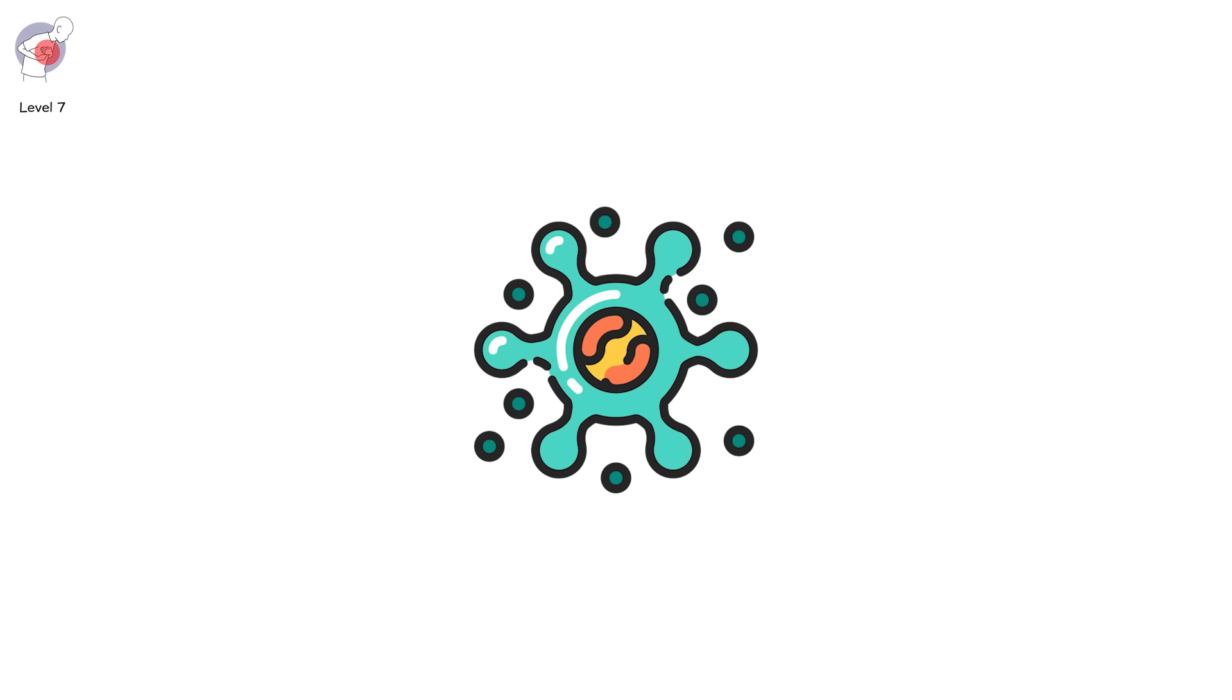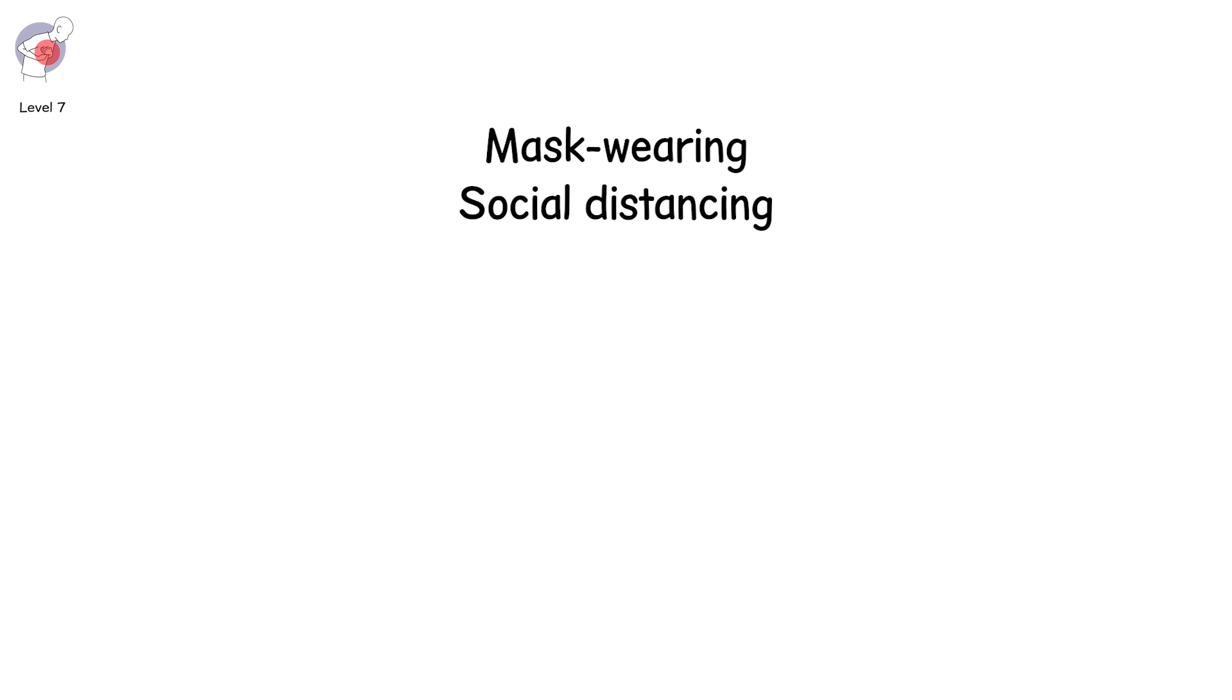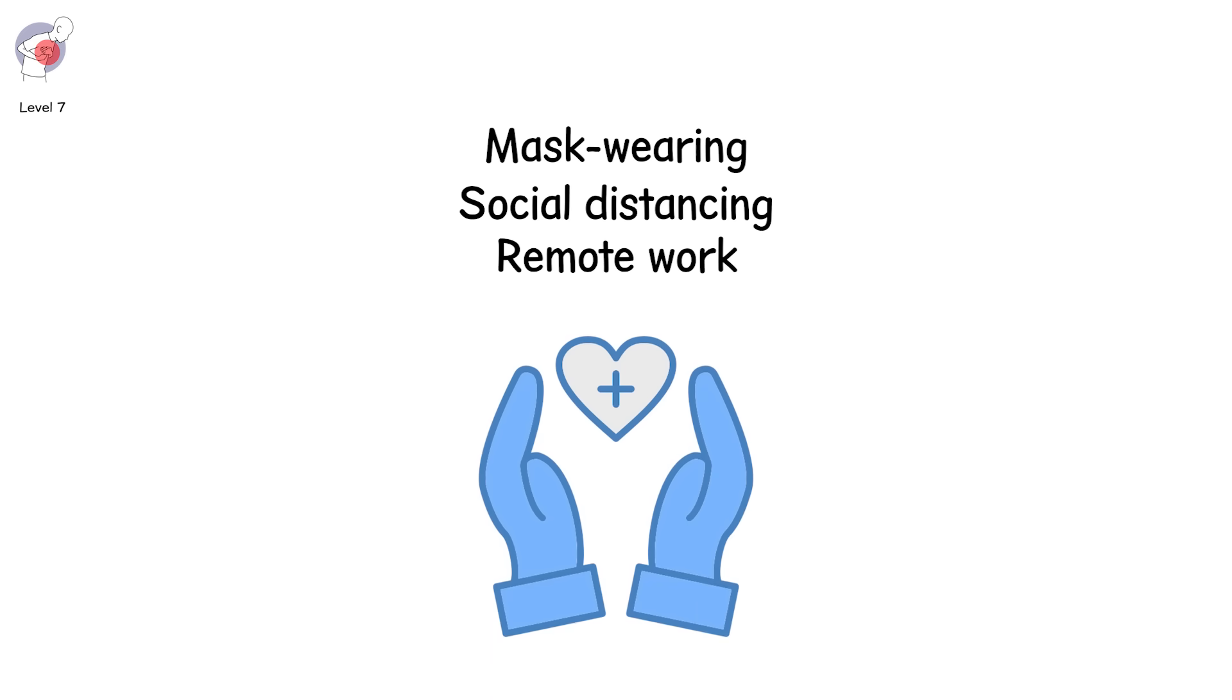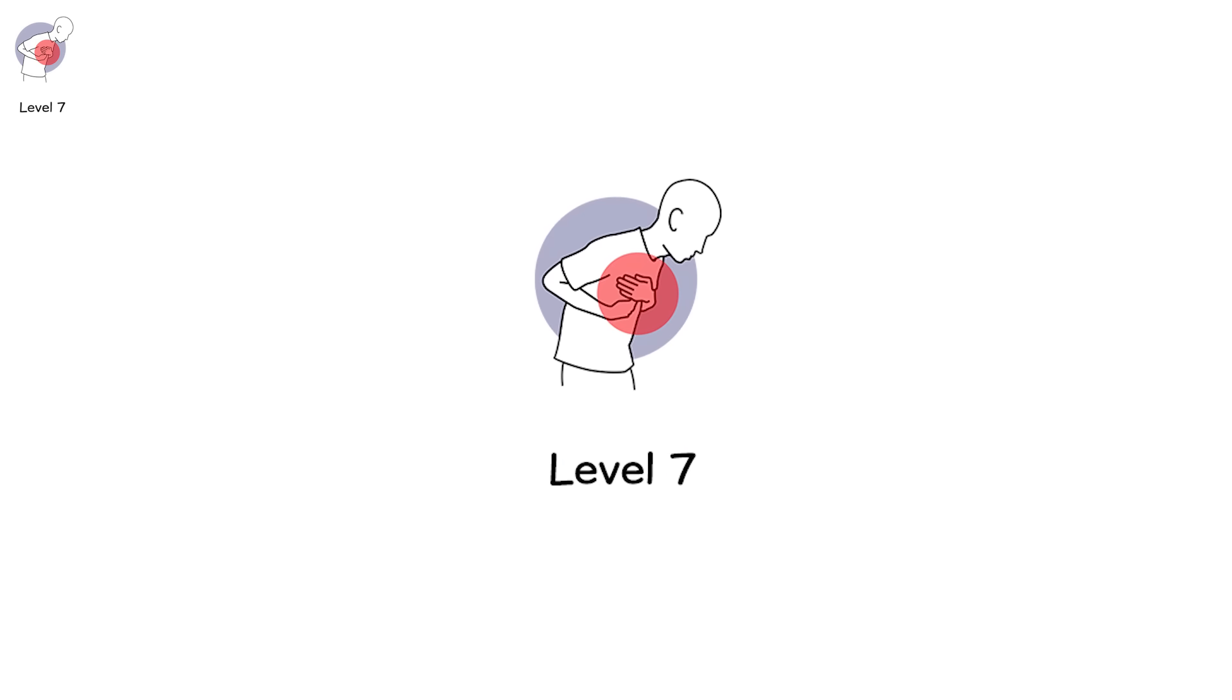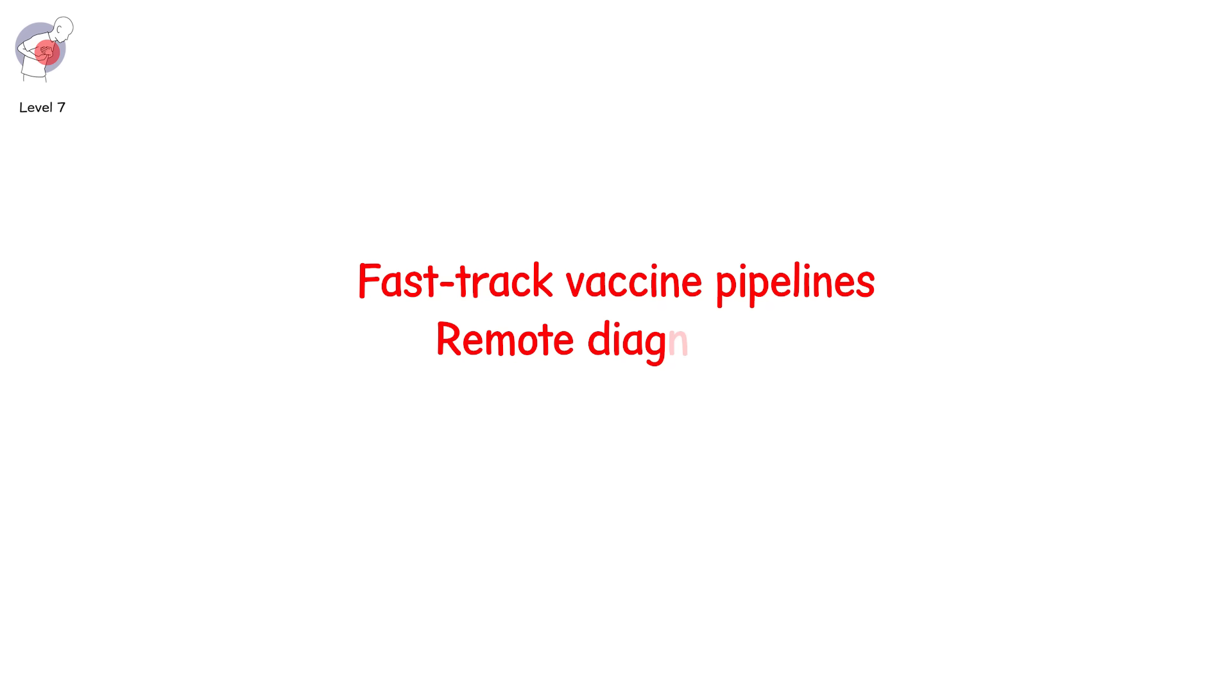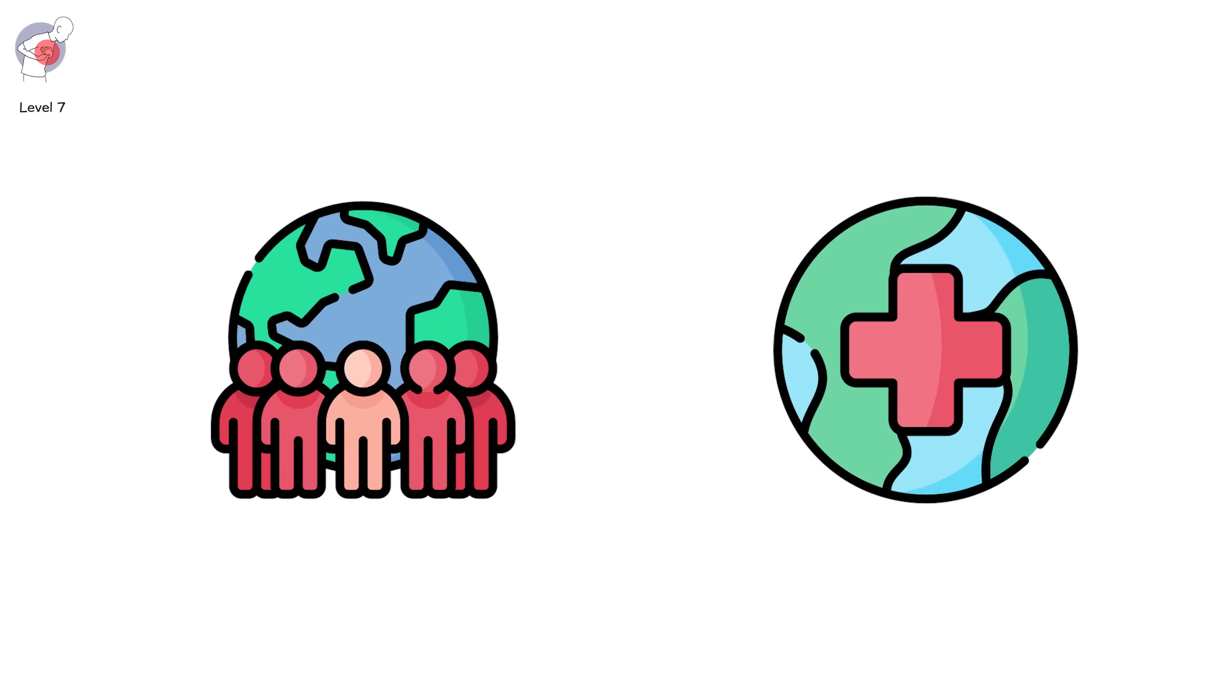And culturally, something else shifts. We begin to see disease not just as something we treat, but something we prevent collectively. Mask wearing. Social distancing. Remote work. These aren't just public health tools. They're social adaptations. Level 7 diseases forced a new medical revolution. Fast-track vaccine pipelines. Remote diagnostics. Digital epidemiology. But even more? They reminded us that global health is a shared responsibility. No one's immune until everyone is.